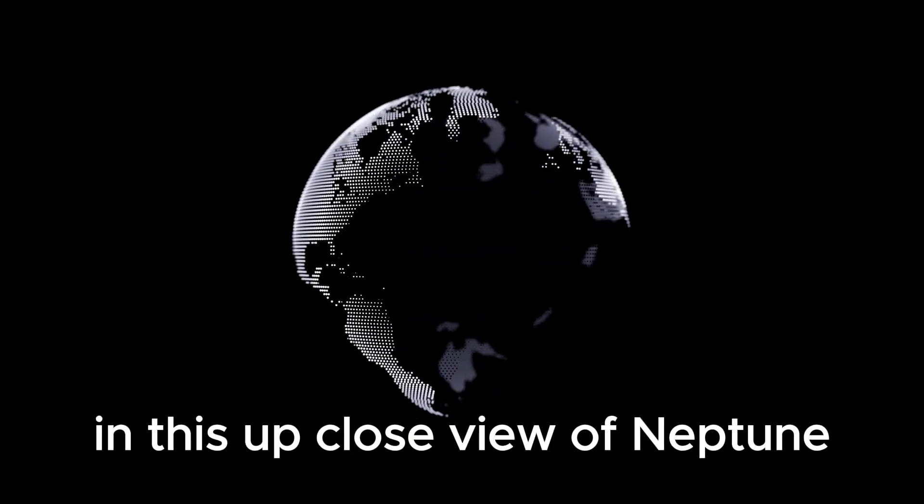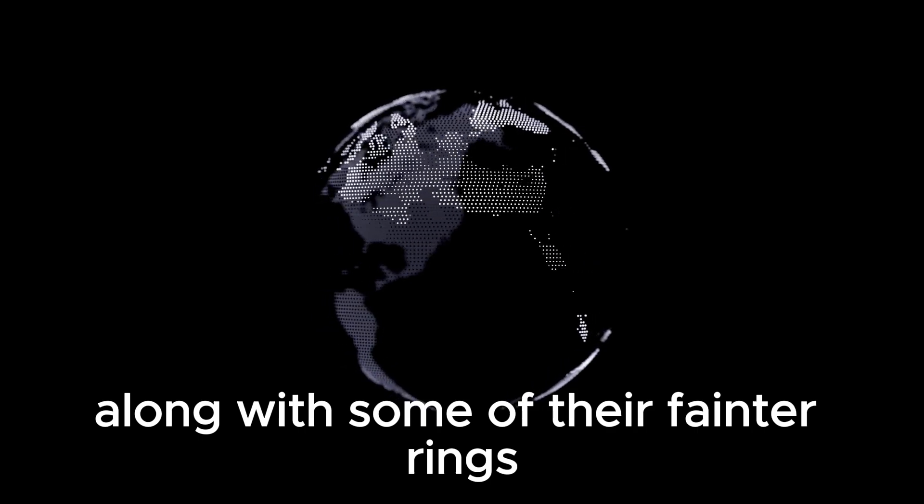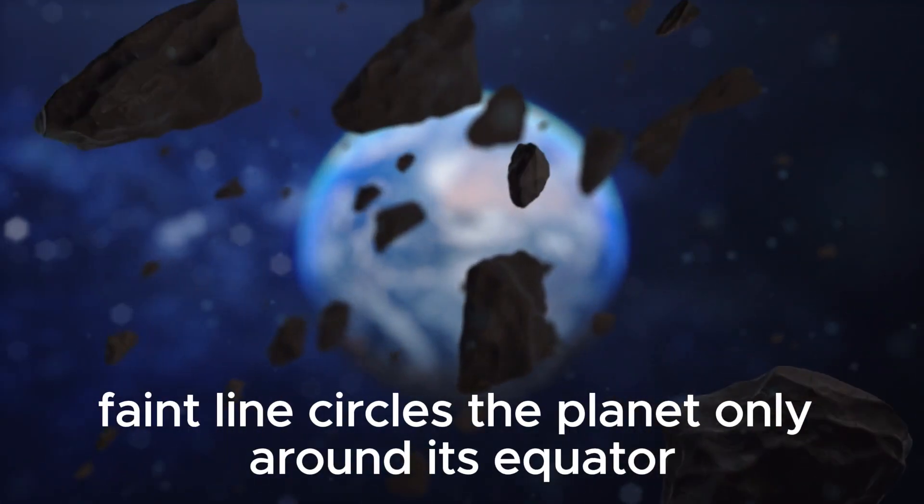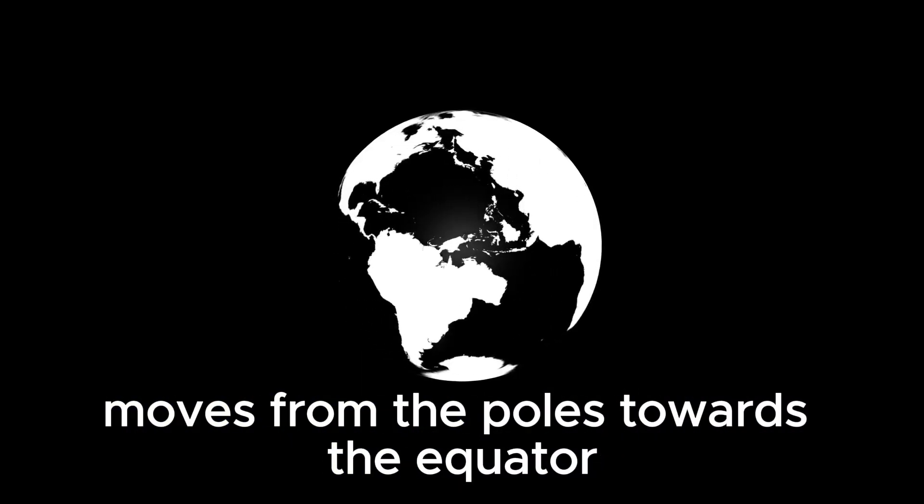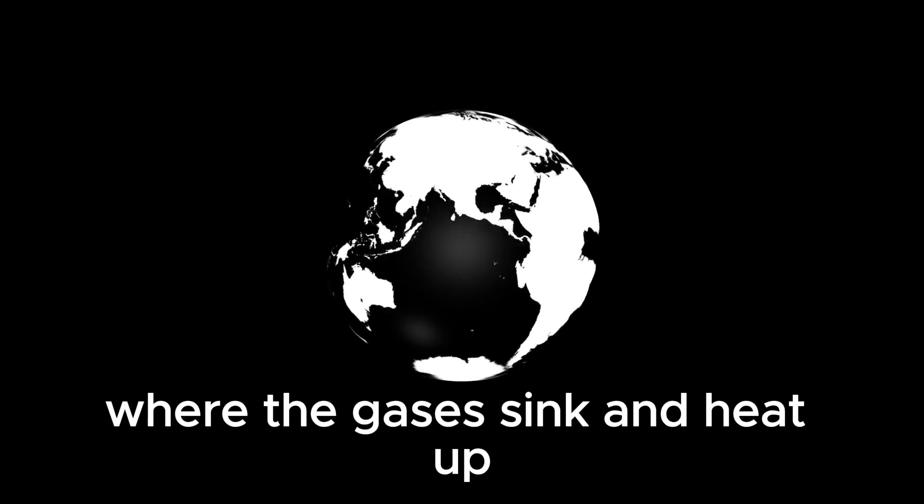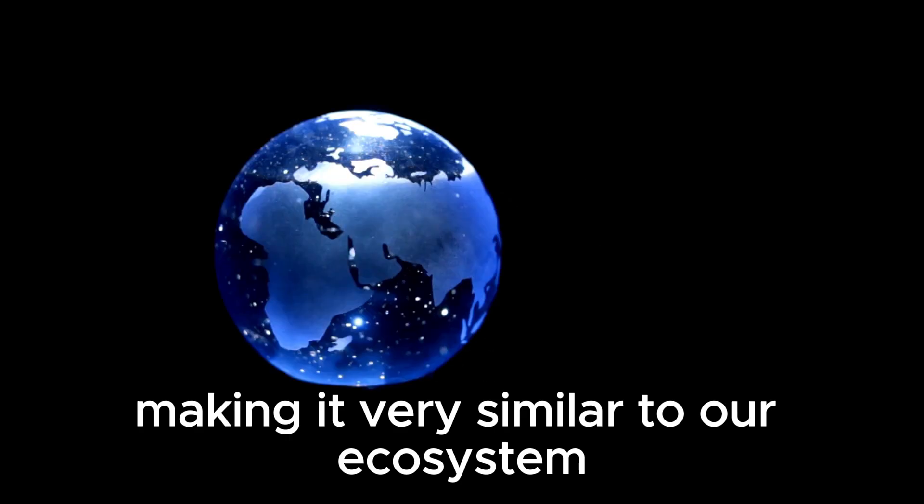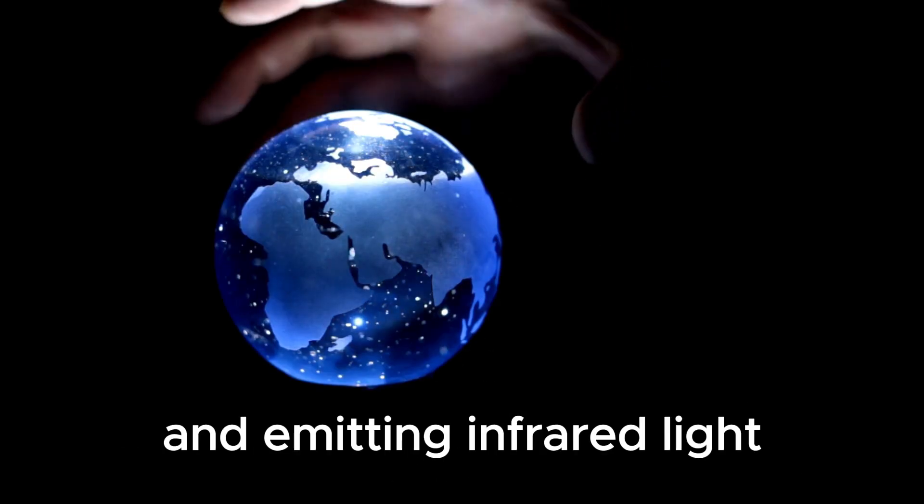In this up-close view of Neptune, the clouds and rings are more clearly visible, along with some of their fainter rings. It's interesting to see that a very thin, faint line circles the planet only around its equator. The movement in Neptune's atmosphere moves from the poles towards the equator, where the gases sink and heat up, making it very similar to our ecosystem. This weak arc is probably warmer gas that is heating up and emitting infrared light.